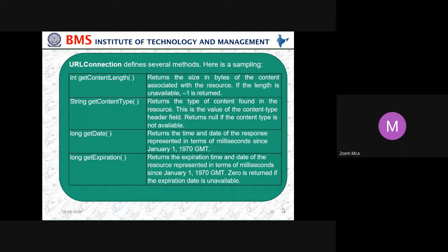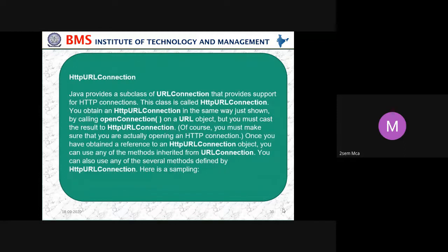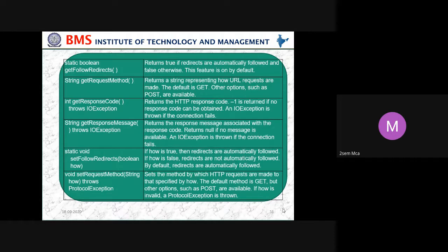URL connection defines several methods including getContent, getContentType, getDate, and getExpiration. Then there is HttpURLConnection, which uses openConnection. HttpURLConnection includes different static fields and methods covering request method, response code, and response message.